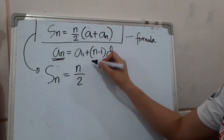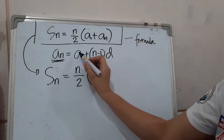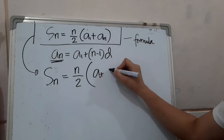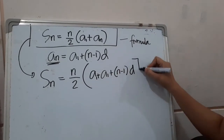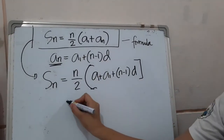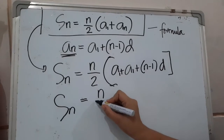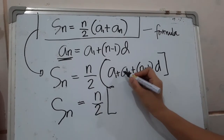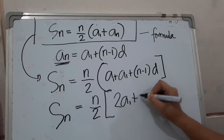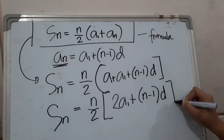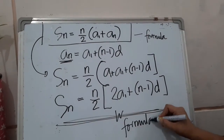So we have n over 2, then inside the bracket: first term plus the substituted expression a sub 1 plus n minus 1 times d. Simplifying, we combine the two first terms to get twice a sub 1, giving us: S sub n equals n over 2 times the quantity 2 times a sub 1 plus n minus 1 times d. This is our second formula for finding the sum of an arithmetic sequence when we have a common difference but no last term.